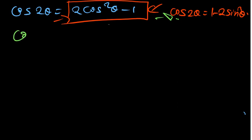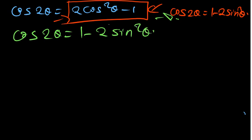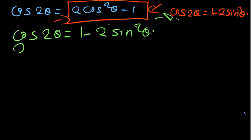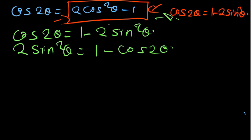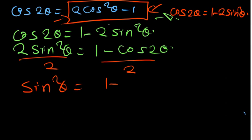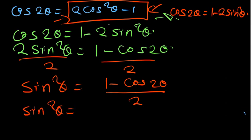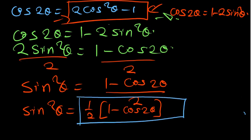Now using cos 2 theta equals 1 minus 2 sin squared theta, I want to make sin squared theta the subject. Rearranging: 2 sin squared theta equals 1 minus cos 2 theta. Dividing both sides by 2: sin squared theta equals (1 minus cos 2 theta) divided by 2, which is one-half times (1 minus cos 2 theta). This is another identity you have to know.